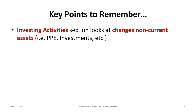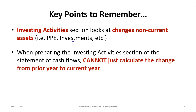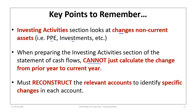Key points to remember for the investing section: we look at changes in non-current assets — property, plant and equipment, investments, intangible assets, etc. We cannot simply calculate the change from beginning to ending balance. Many students apply the indirect method operating activities approach and just take the change — you cannot do that. We must reconstruct all relevant accounts to identify specific changes, because accounts can have changes from both acquisitions and disposals.